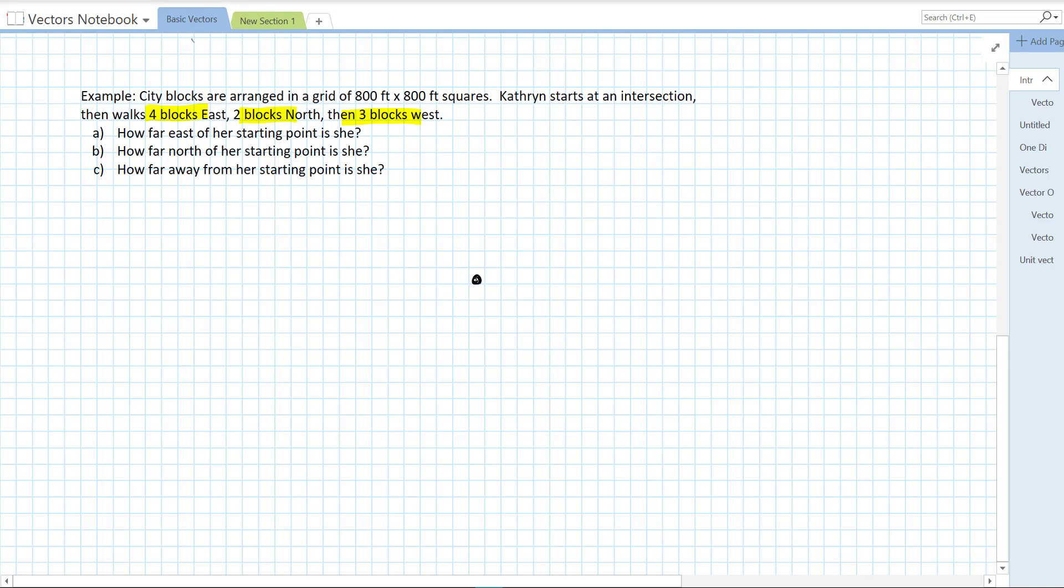She starts out at an intersection, and this is not going to be to scale, but that's fine. She travels four blocks east. So I'm going to draw a rightward arrow to represent east. Since it's four blocks, and each block is 800 by 800, it's just 800 by four feet, or 800 times four, which is 3,200 feet.